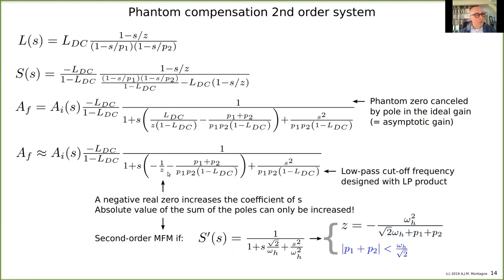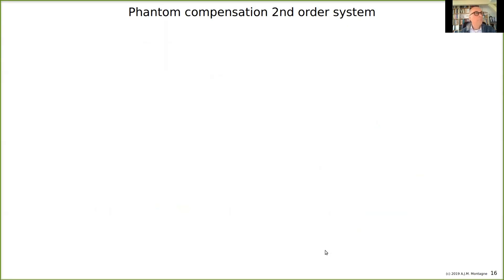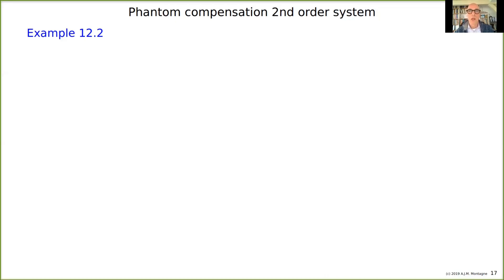We can only tune the coefficient in one direction. If the magnitude of the sum of the poles is already larger than square root of 2, then we can do nothing. Correction to Butterworth is only possible if the magnitude of the sum of the poles is smaller than the bandwidth divided by the square root of 2. Let's do an example — example 2.12 from the book. This does not yet cover the implementation of the phantom zero in a circuit; that is the next presentation.